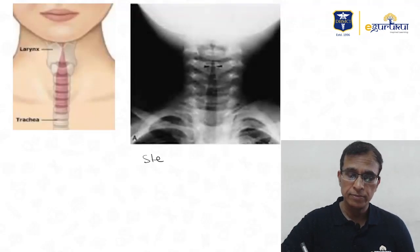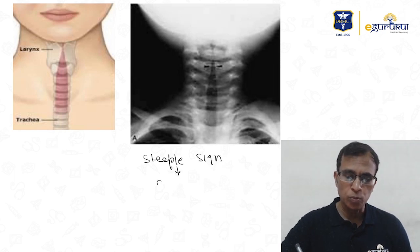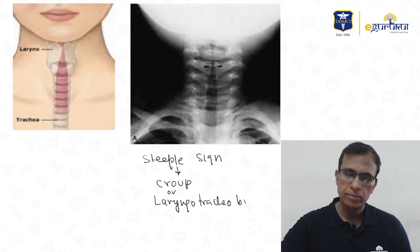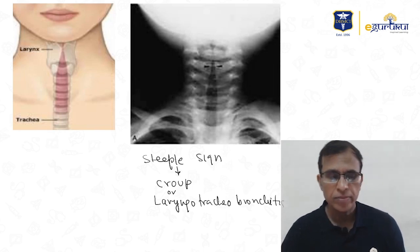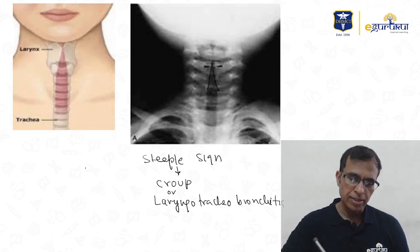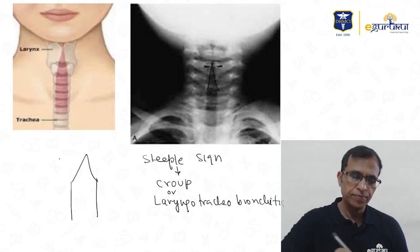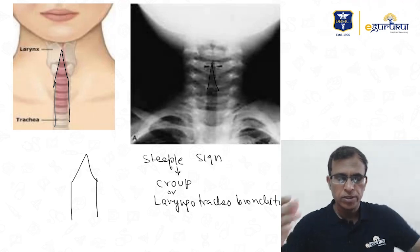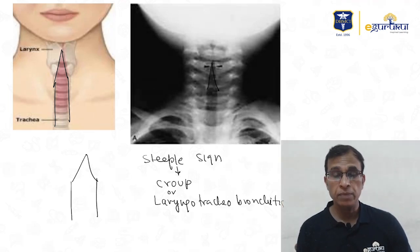The steeple sign is seen in croup, also called laryngotracheobronchitis — a viral disease. The airway narrows to look like the steeple on top of a church. This is laryngotracheobronchitis (croup).